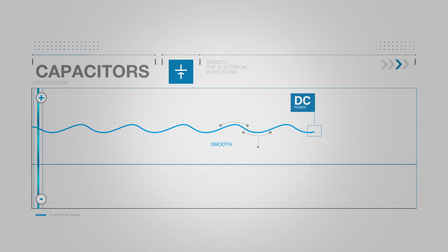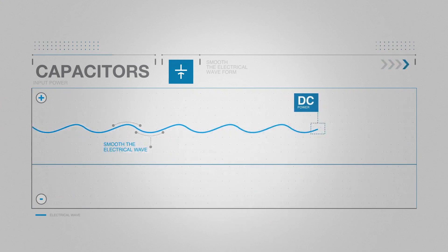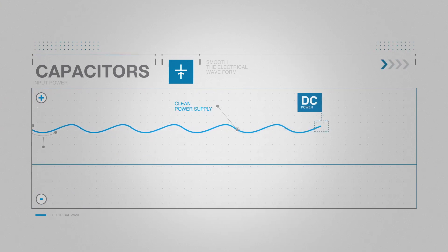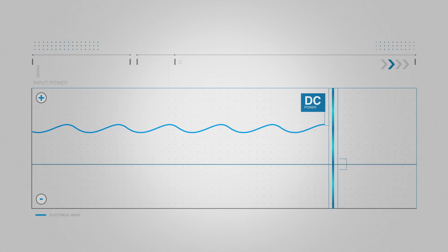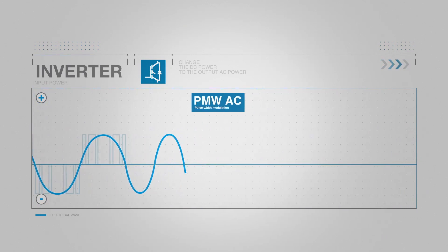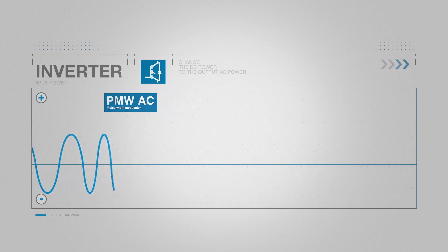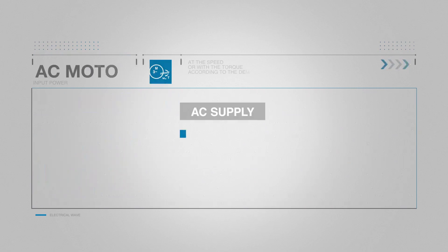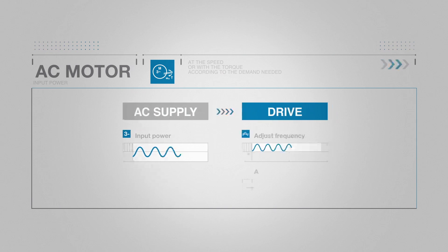This is done to smooth out the electrical waveform which provides a clean power supply for the next step. Power then flows from the capacitors to an inverter that changes the DC power to the output AC power that goes to the motor. This step allows the drive to adjust the frequency and voltage that is supplied to the motor based on your current process demands.